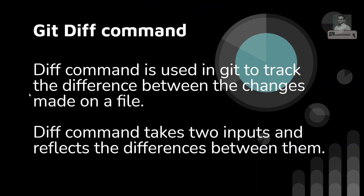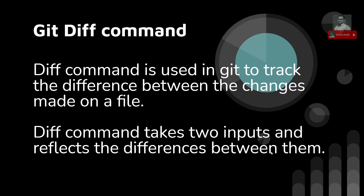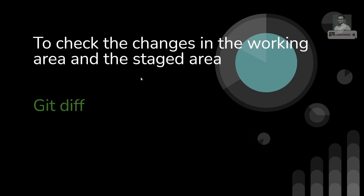The diff command is mainly used in git to track the difference between the changes made on a file. If you have updated or edited a file and you want to check how it was previously versus what changes you have made, the diff command takes two inputs — two files — and reflects the difference between them.